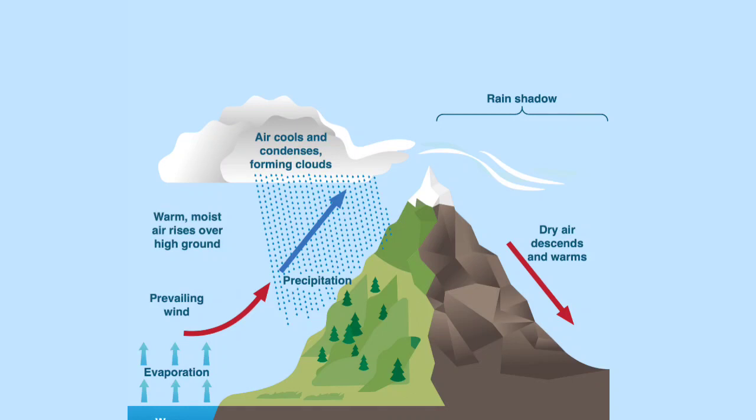But when the wind crosses the mountain and descends downhill on the other side, the winds become dry and hot. As the moisture is less, very little rainfall takes place. The area situated on the leeward side of the mountain, which gets less rainfall, is known as the rain shadow region.